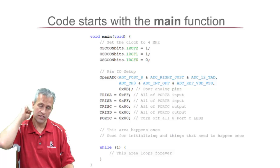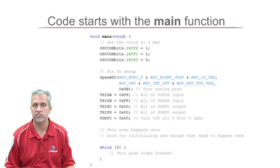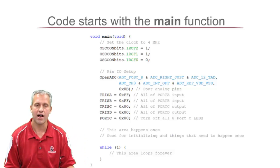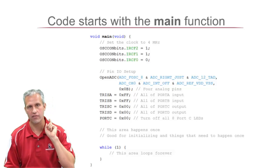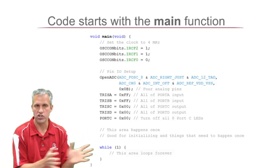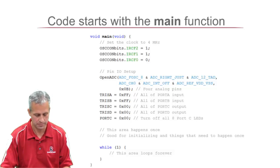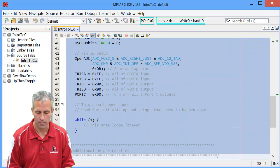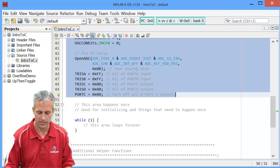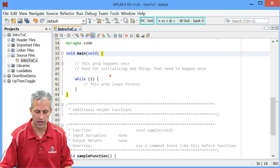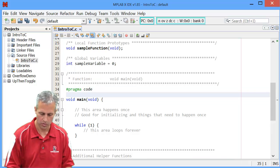The next thing in this template file is the main function. A feature of C is that it always looks for a function called main. Those four letters — M-A-I-N — are sacred. In your project, you can have only one function with the name main. When you hit go, it looks for that function named main. For our template, we've got a lot of stuff in here, but this is for the microcontroller, so I'm going to blow away some of it — keep the area that happens once and the while-one loop, but blow away the things I don't need.